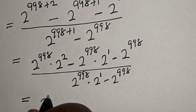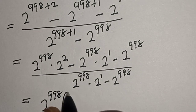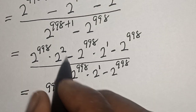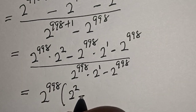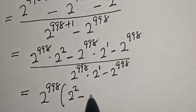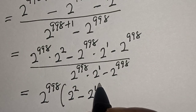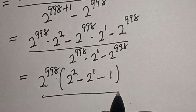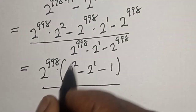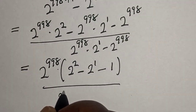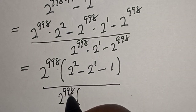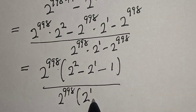We have 2 raised to power 998 multiplied by 2 raised to power 2, minus 2 raised to power 998 multiplied by 2 raised to power 1, minus 2 raised to power 998, divided by 2 raised to power 998. Since 2 raised to power 998 is common at the numerator, we factor it out over 2 raised to power 998.